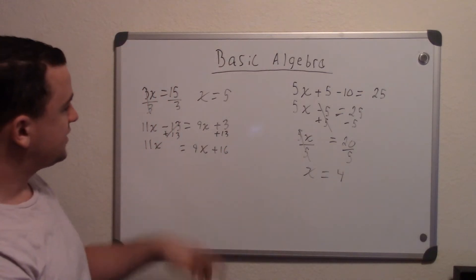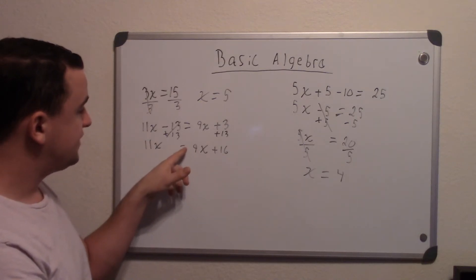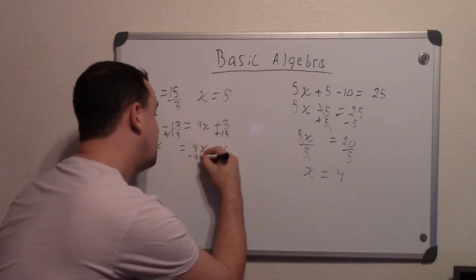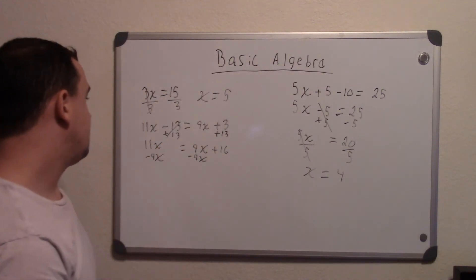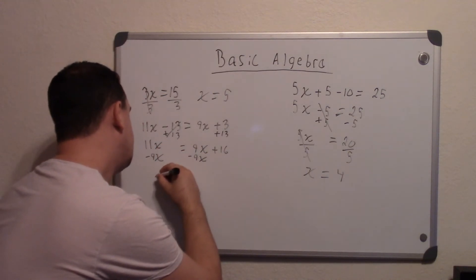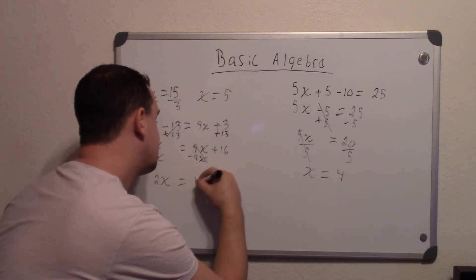So now I'll work with the x's. So I want to get x's on this side. So this is essentially being plus 9. So I'm going to subtract 9x from both sides. Then when I get that, I get now 2x equals, those cancel out, equals 16.